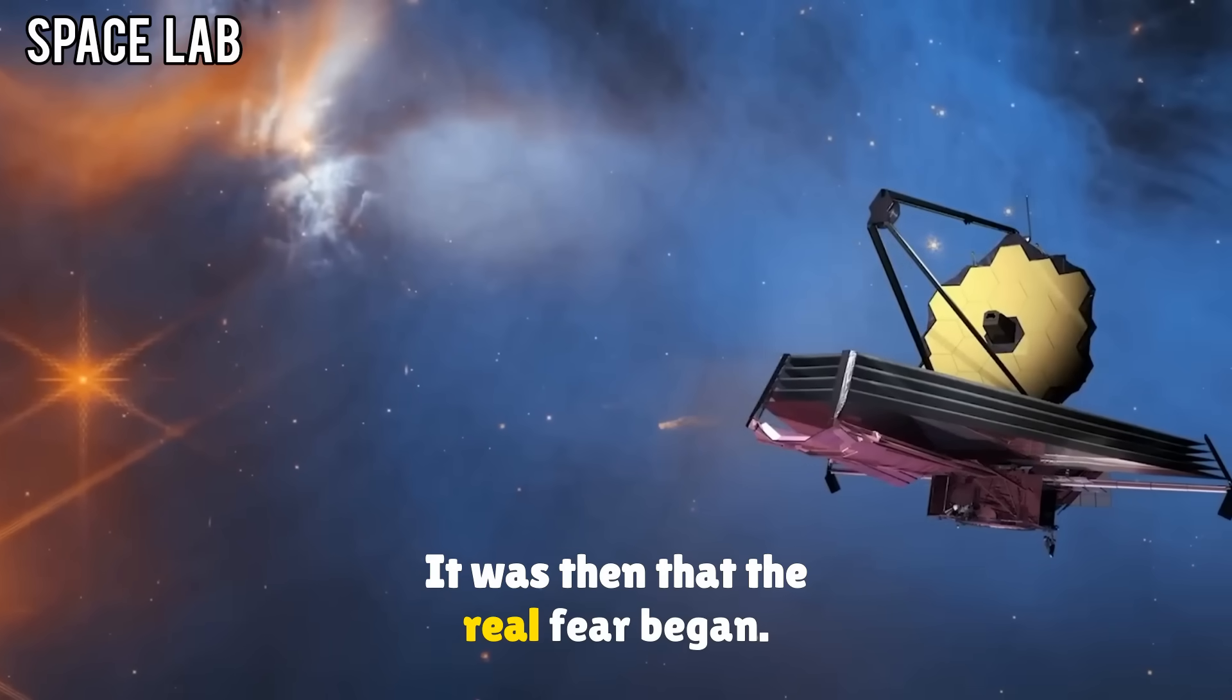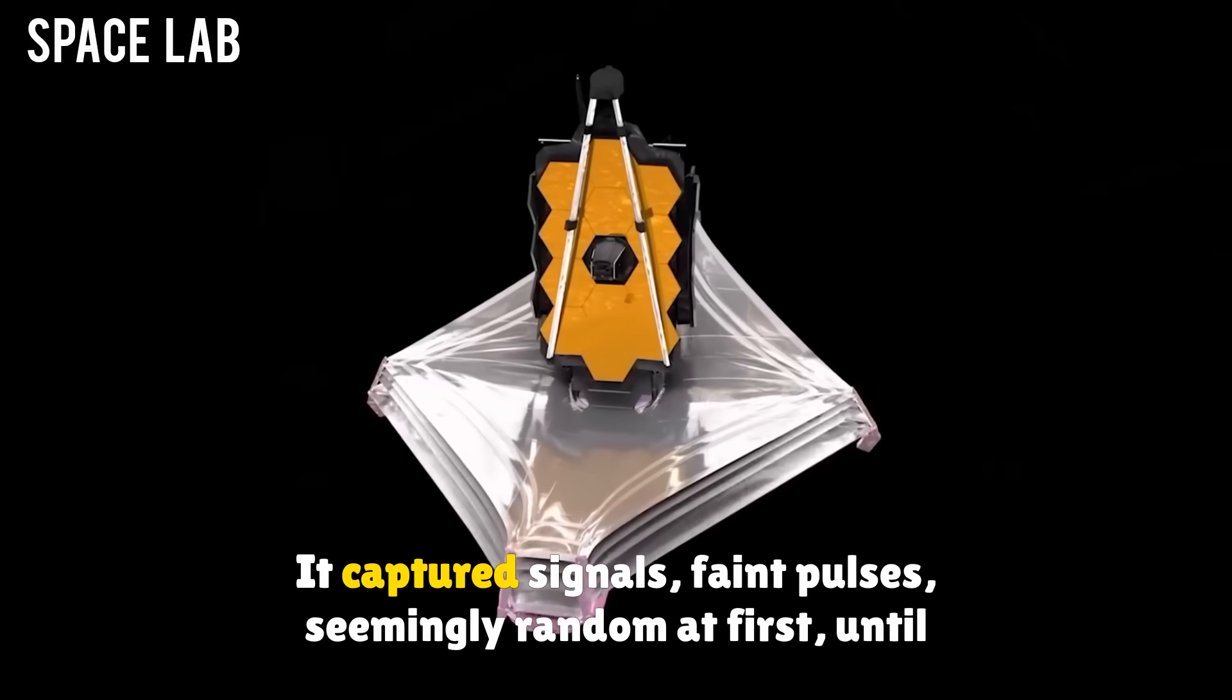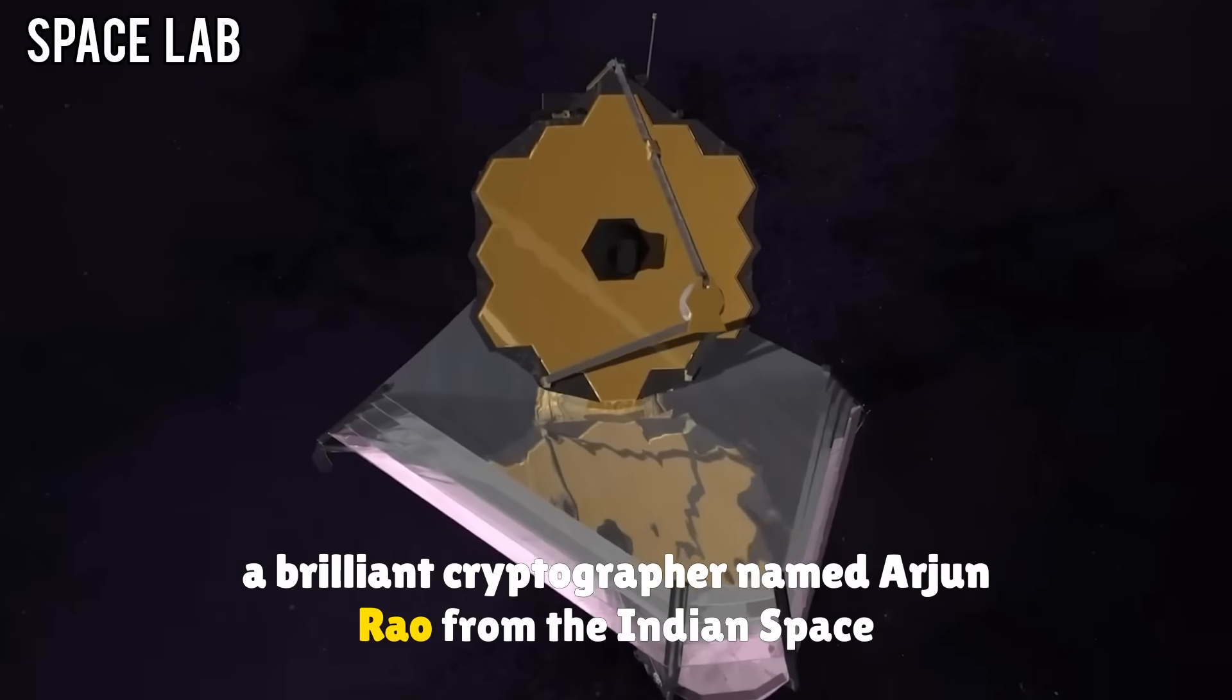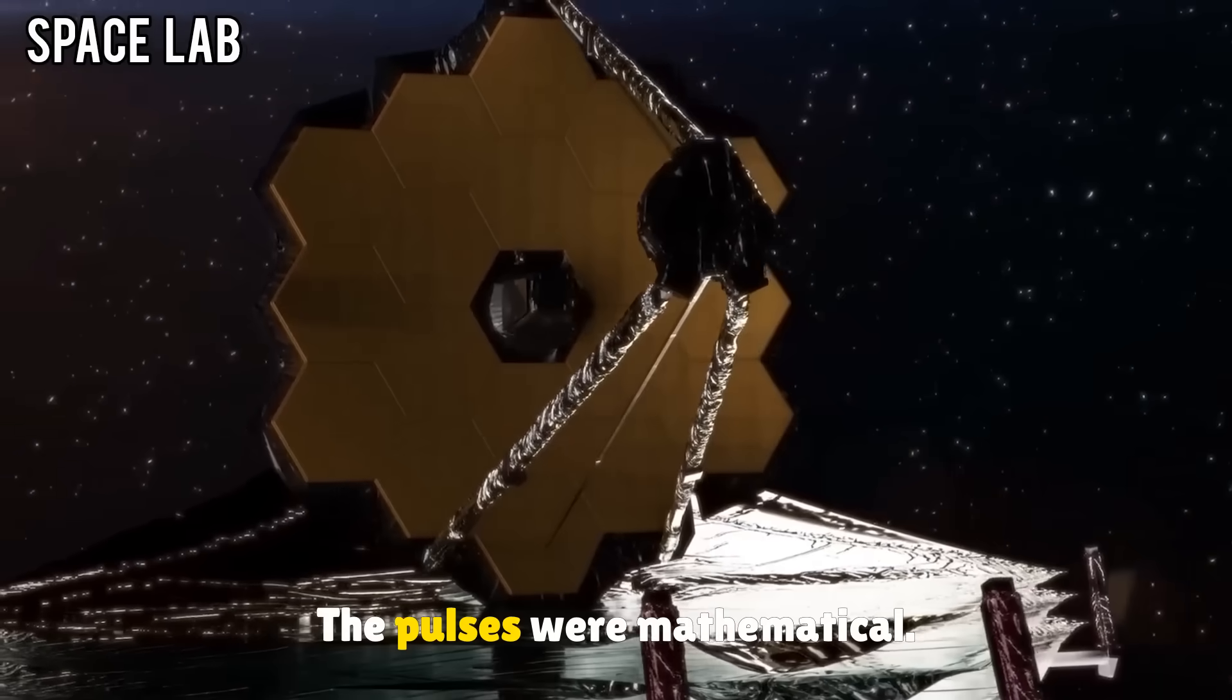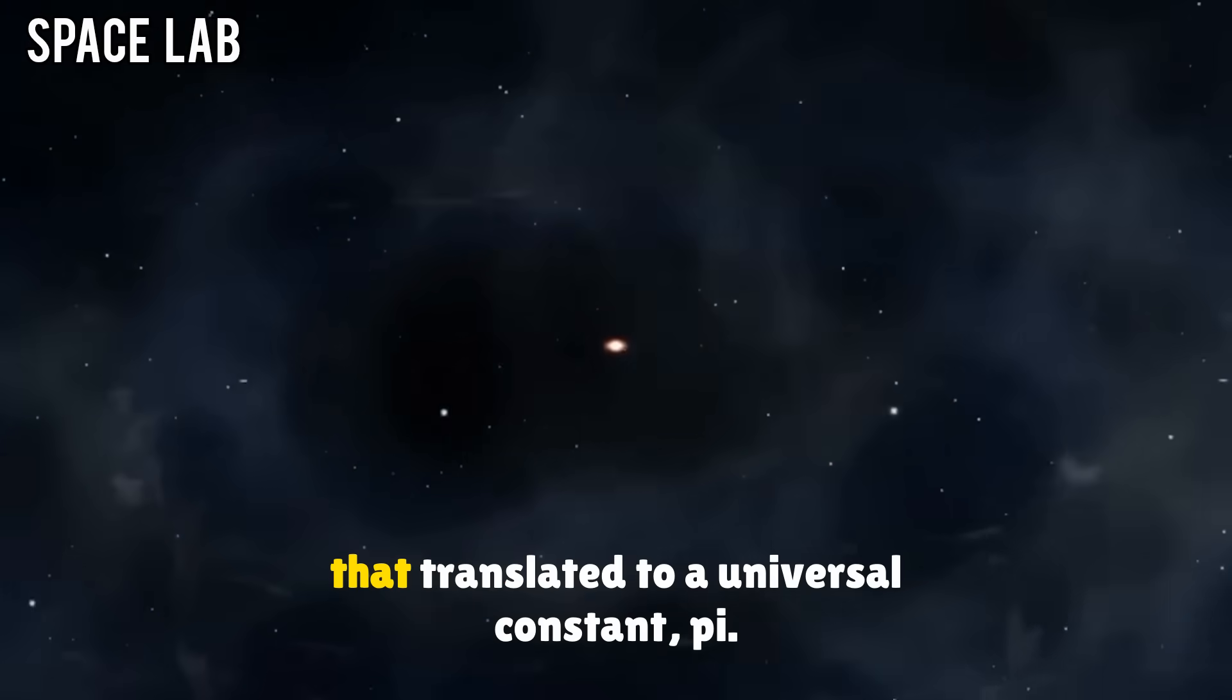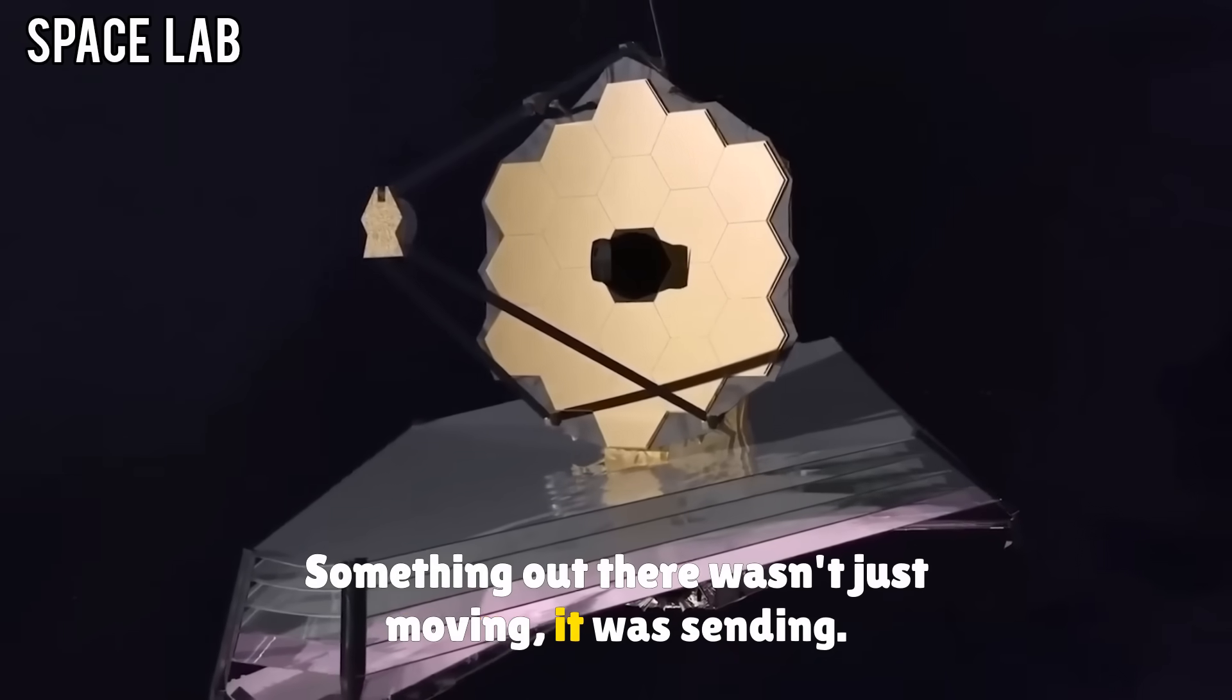In the days following the detection, the James Webb Telescope picked up more than just images. It captured signals, faint pulses, seemingly random at first, until a brilliant cryptographer named Arjun Rao from the Indian Space Research Organization noticed a chilling pattern. The pulses were mathematical: prime numbers, the Fibonacci sequence, and finally a binary pattern that translated to a universal constant, pi. It was a message. Something out there wasn't just moving, it was sending.